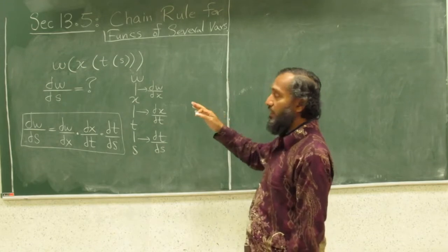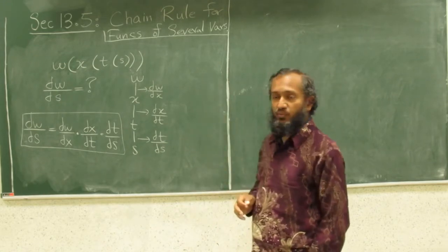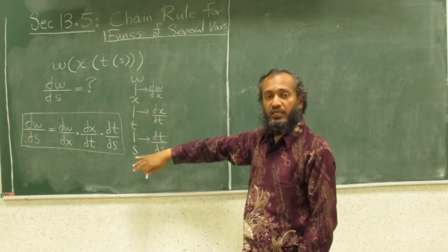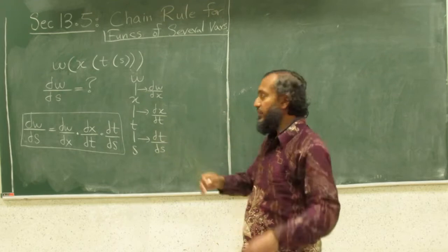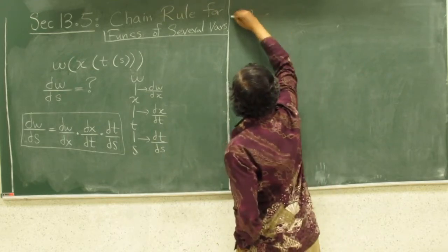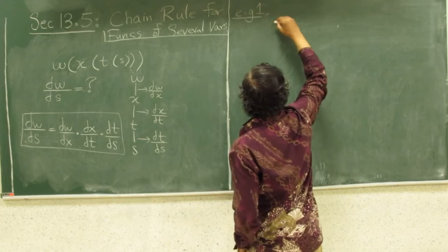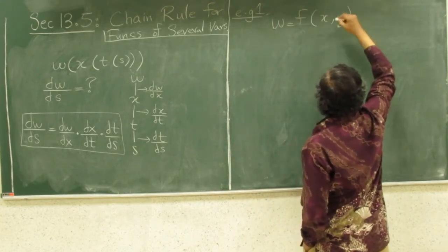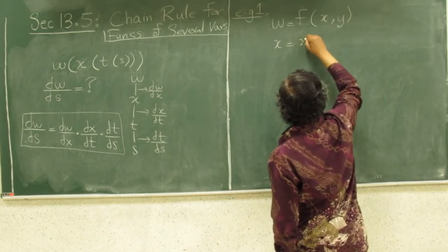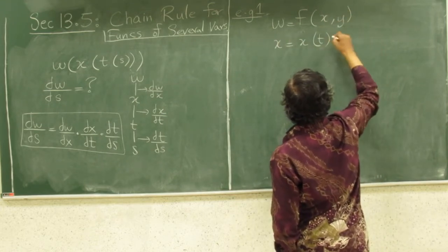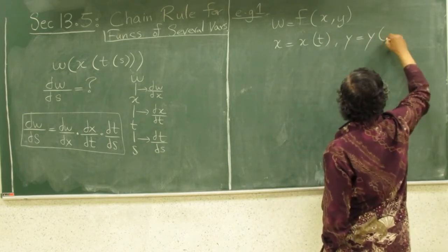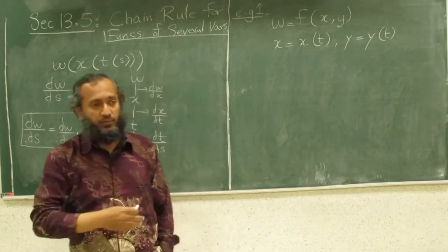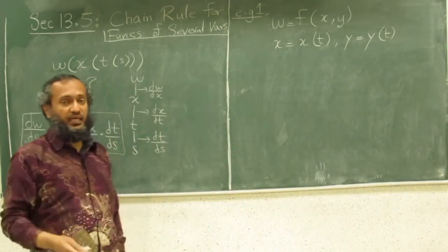Now let's take a concrete setup with functions of several variables and see how we do that. The only difference that will change here is that instead of a single chain, you will now have a tree. Let's see an example. You have w as a function of x and y, where x is a function of t and y is a function of t — so x and y themselves have a relationship with another variable; t could be time or something else.